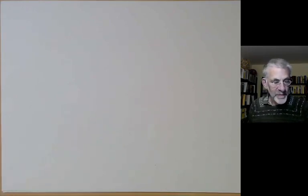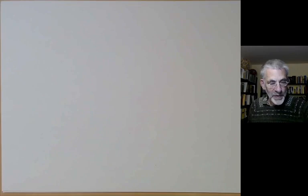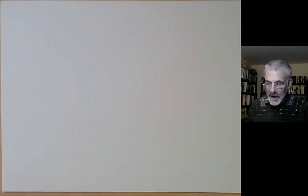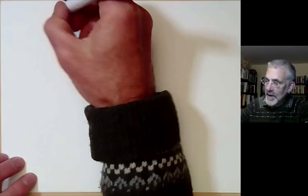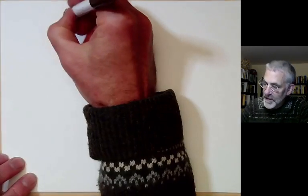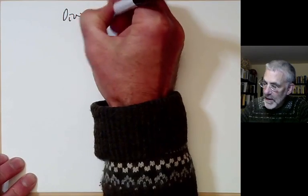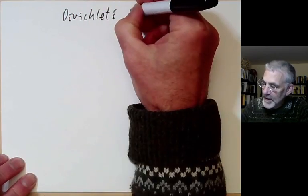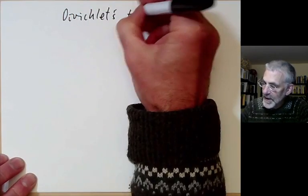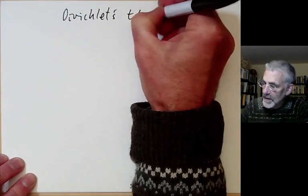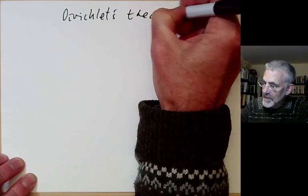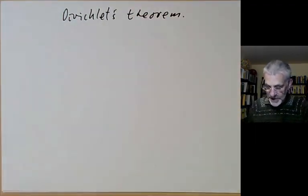This lecture is part of Berkeley Math 115, an introductory undergraduate course on the theory of numbers, and it will be about the proof of Dirichlet's theorem about the fact that there are infinitely many primes in arithmetic progressions.